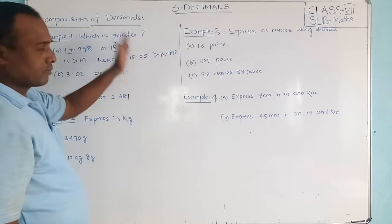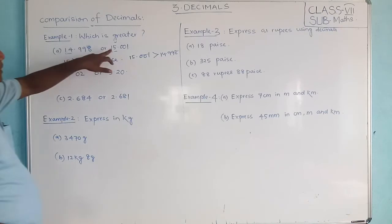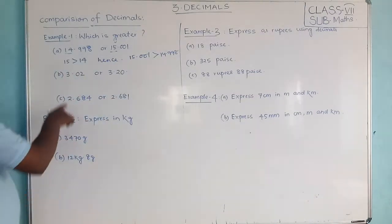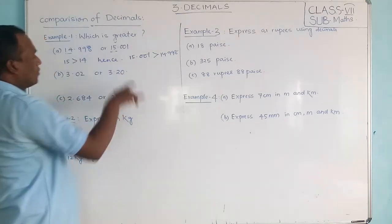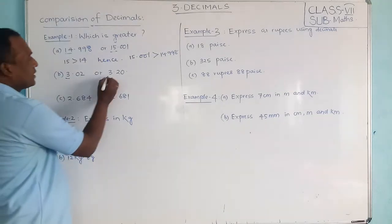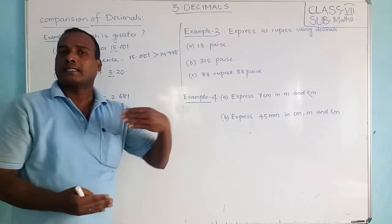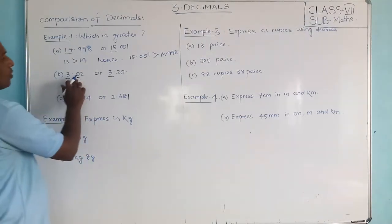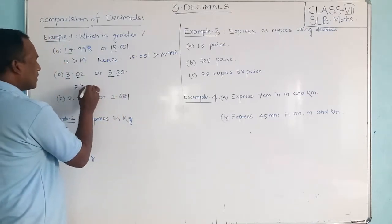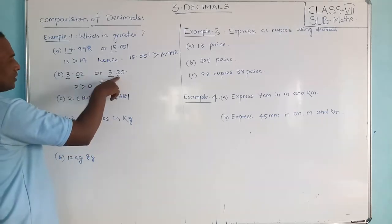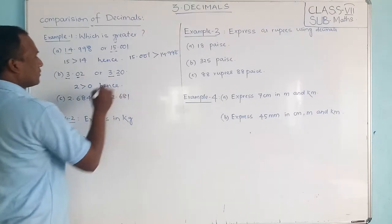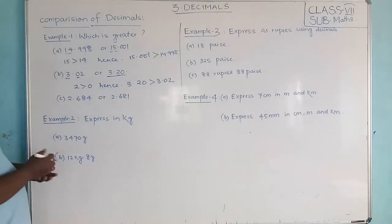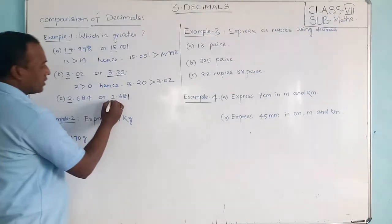Since the integral part is already decided, no need to check the tenth, hundredth, or thousandth place. Now come to the second example: 3.02 or 3.20. Integral part — 3 here and also 3 — both are same. So go to the decimal place. Check the tenth place: here it is 0, and here it is 2. Since 2 is greater than 0, this number is greater. So 3.20 is greater than 3.02.